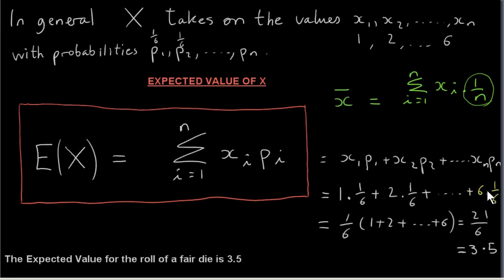As a matter of fact, for the die roll example, since the probabilities are all the same, they're all one-sixth, getting the expected value is the same as getting the mean of the numbers 1 to 6. But, of course, in general, these probabilities are different. They don't have to be the same.